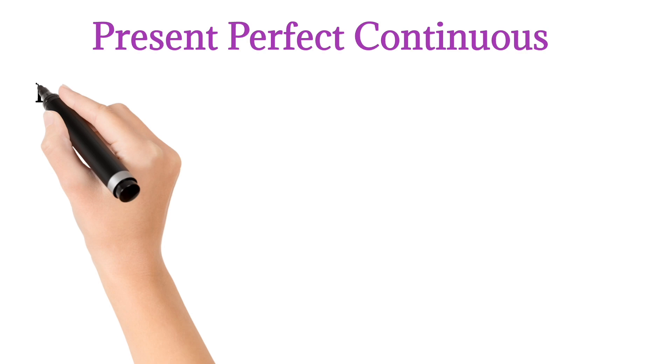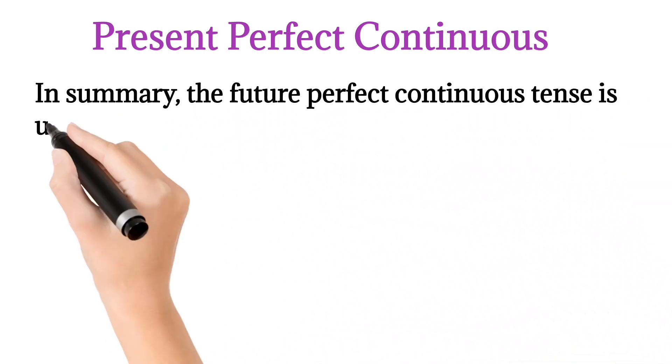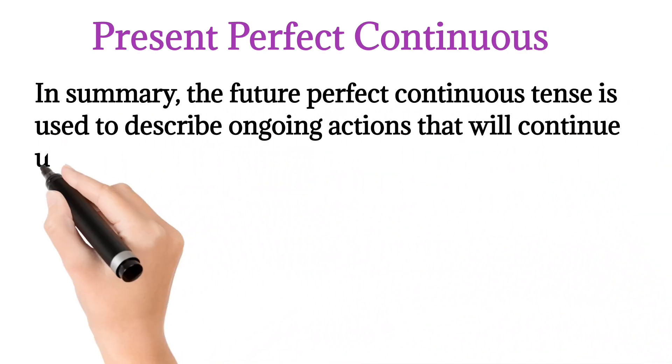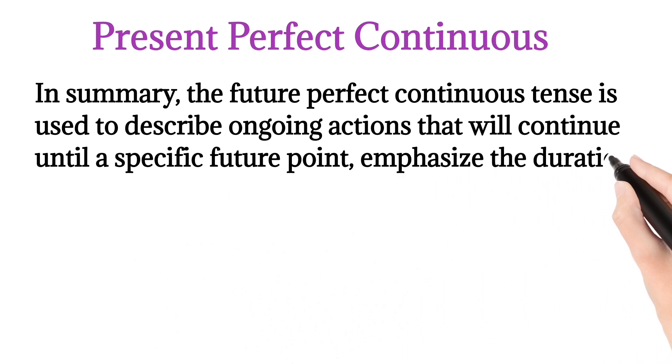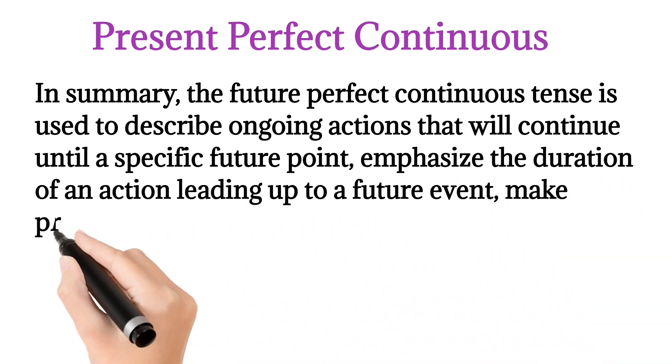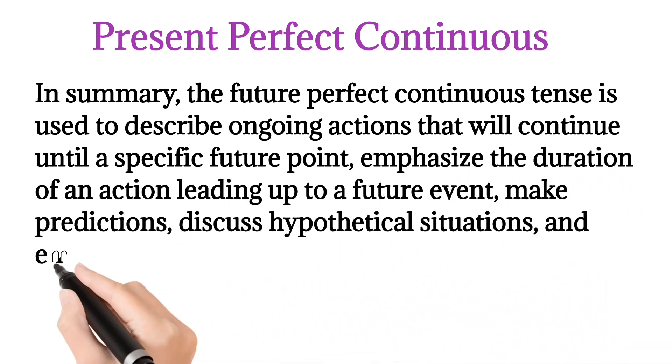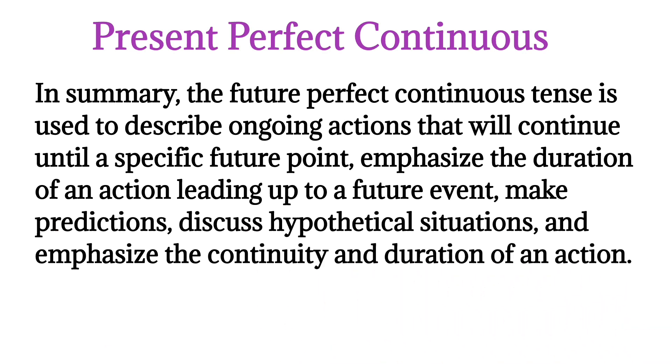In summary, the Future Perfect Continuous Tense is used to describe ongoing actions that will continue until a specific future point, emphasize the duration of an action leading up to a future event, make predictions, discuss hypothetical situations, and emphasize the continuity and duration.